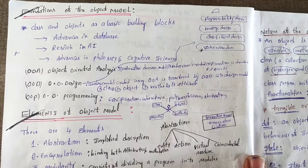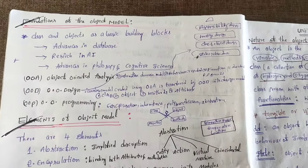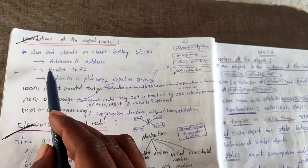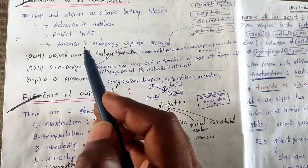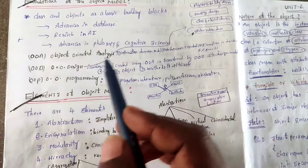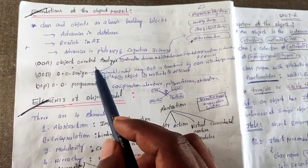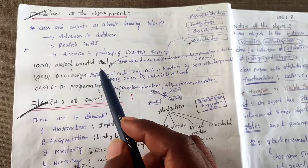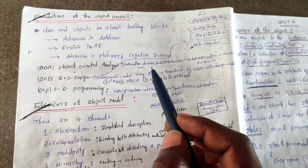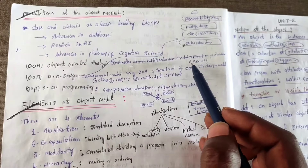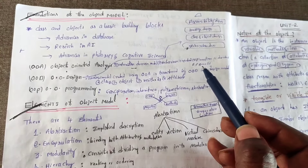The next topic is foundations of the object model. The basic building blocks are classes and objects, drawing from advances in database research, research in artificial intelligence, advances in philosophy, and cognitive science. Object-oriented analysis is one type of analysis, using four components: information domain model, behavioral model, and functional and developmental model.